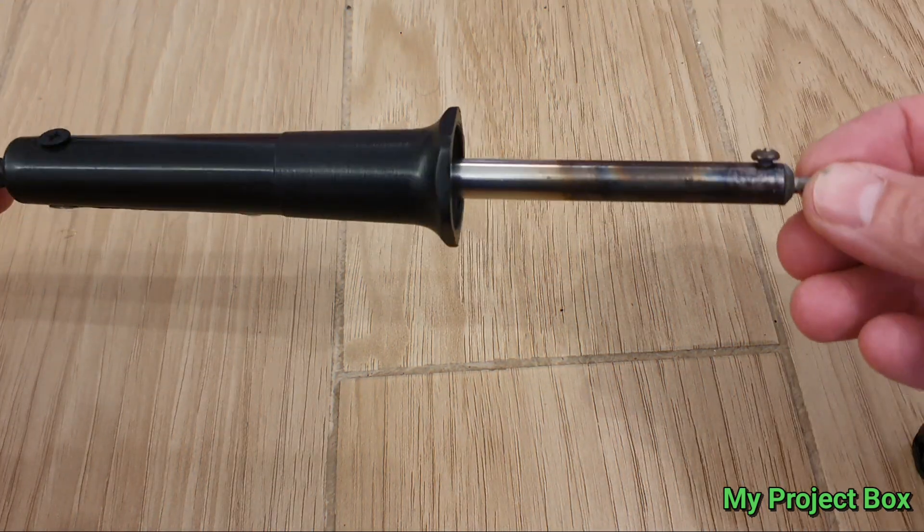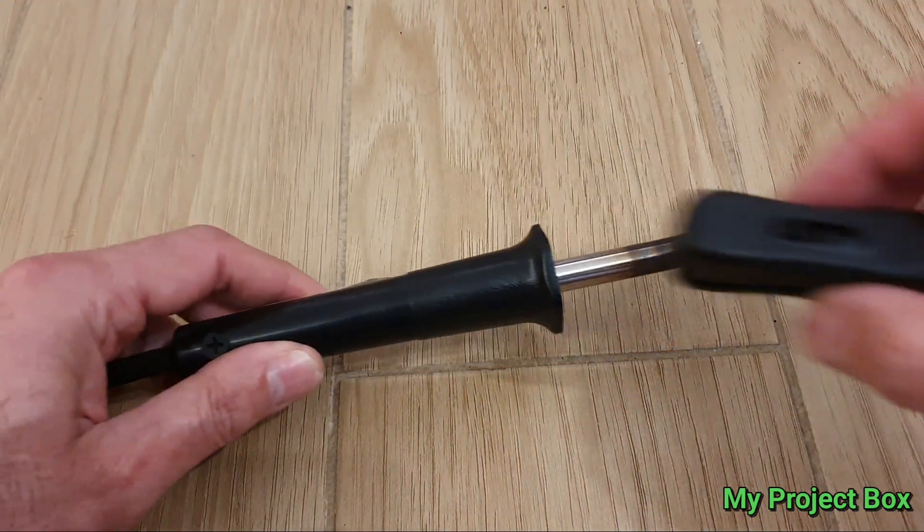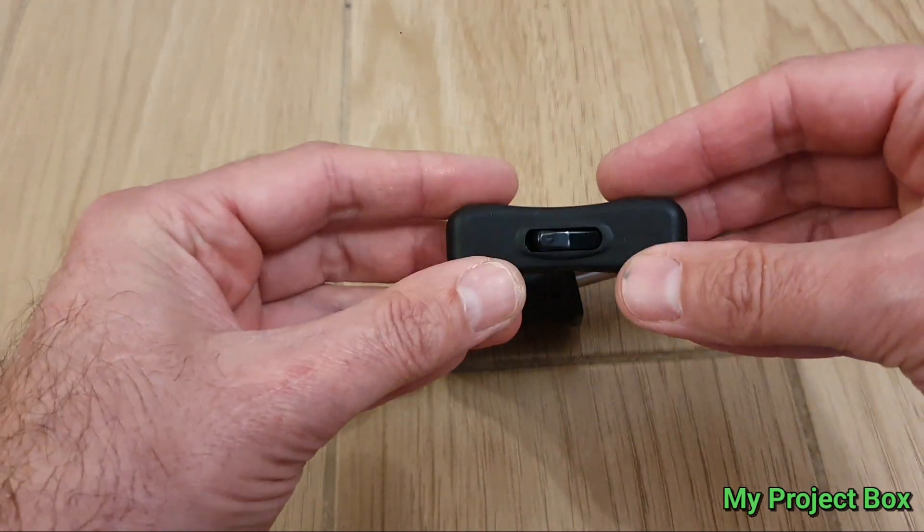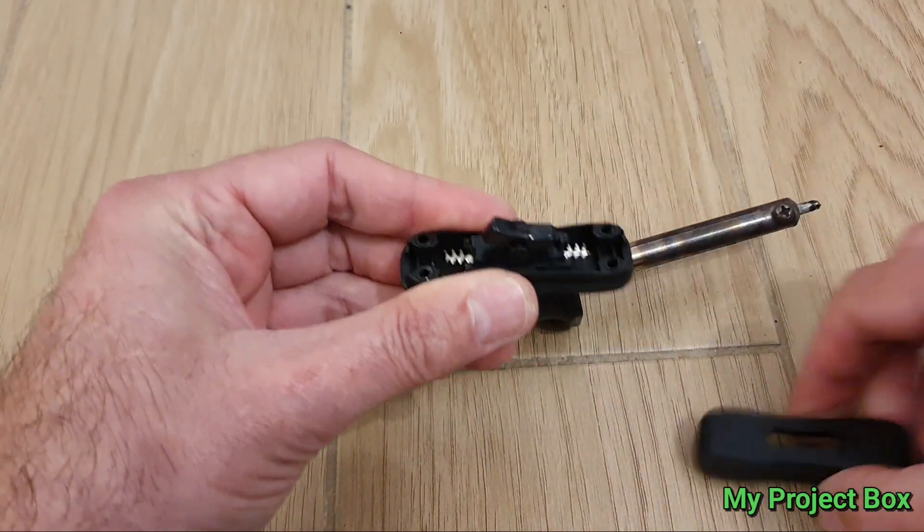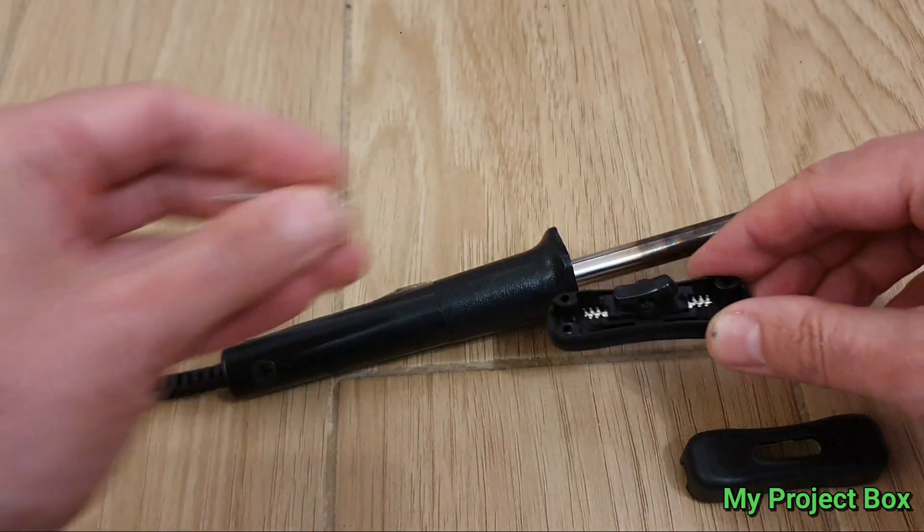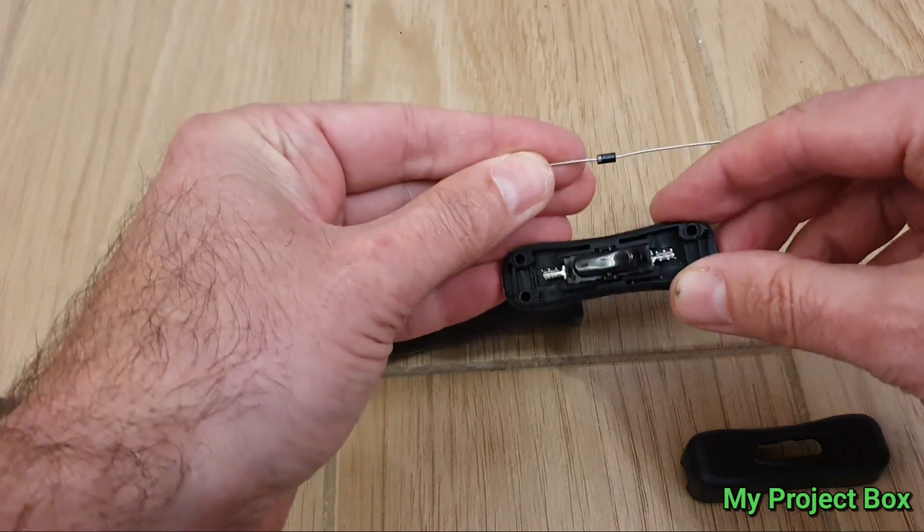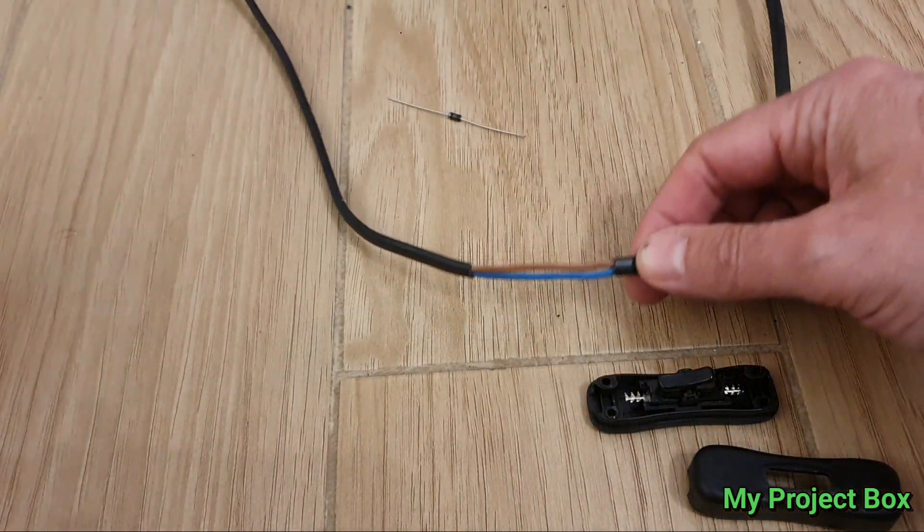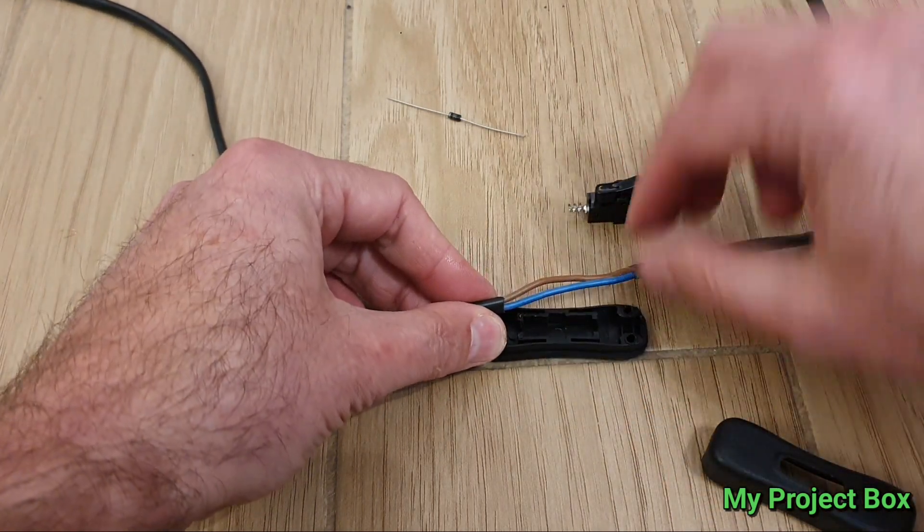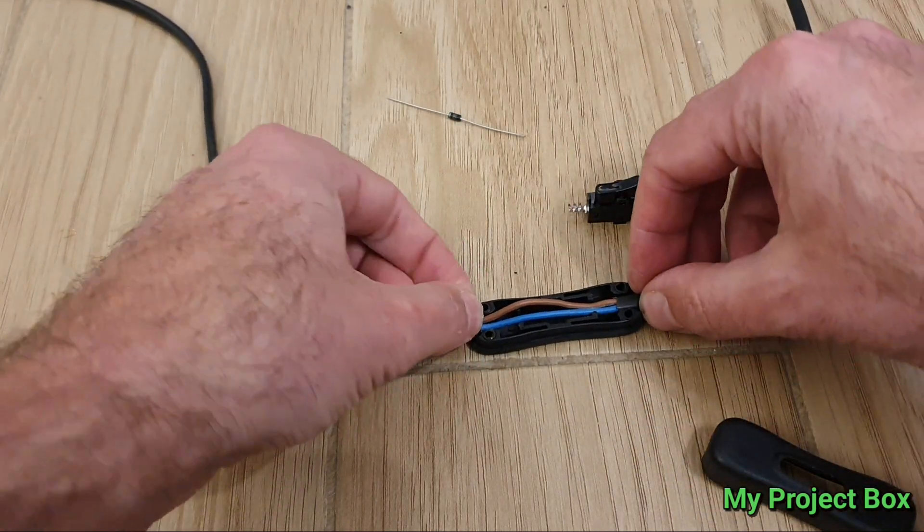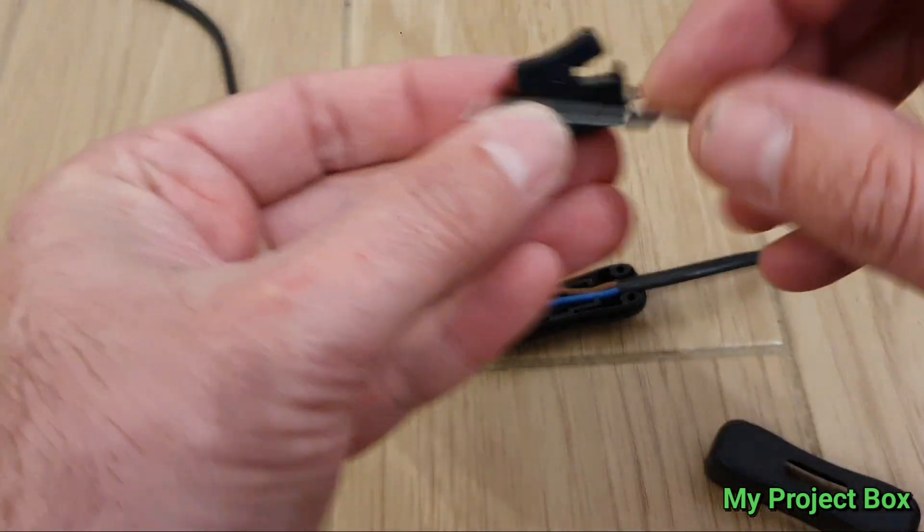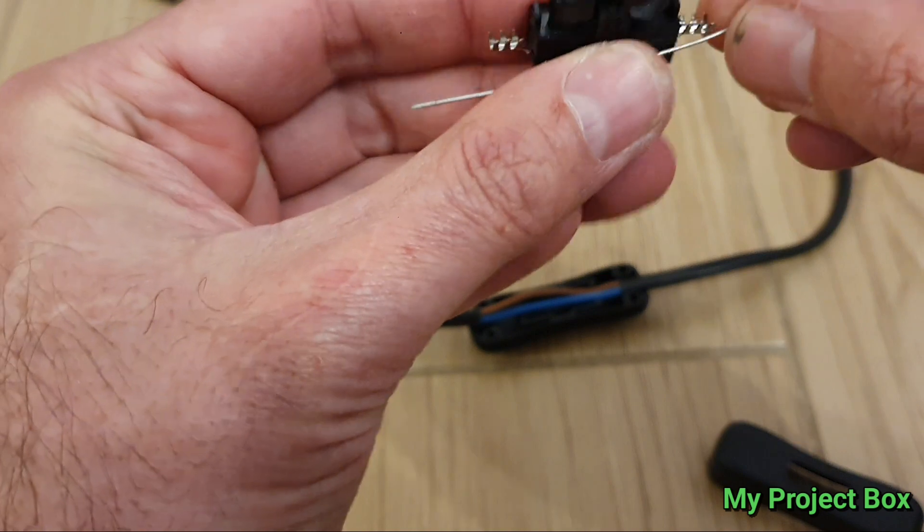For this cheap soldering iron, I was thinking to use one of those inline switches you use on a table lamp and then simply mount the diode inside if there's enough room. This particular type of switch needs crimped wires, so I've stripped the outer insulation away ready.